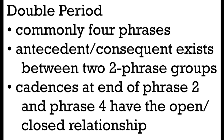The last variant on periods we'll look at is the double period. A double period is typically four phrases long and has that same antecedent-consequent relationship. We're looking for the same weak cadence, strong cadence relationship, but rather than looking at it between two phrases, we're going to look at it between two phrase groups — a grouping of two phrases ending with a weak cadence, and then another grouping of two phrases ending with a strong cadence. This means the cadences we pay particular attention to are at the end of phrase two and phrase four, and they have that open-closed, weak-strong relationship.